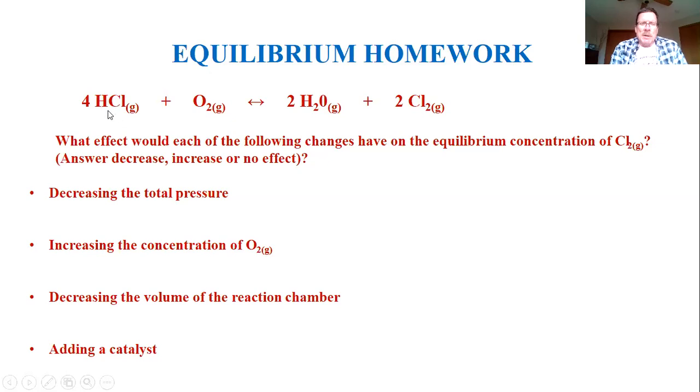For example, here we have 4 moles of hydrochloric acid gas, plus a mole of oxygen, also a gas, and that will go into an equilibrium where you make water vapor and gas again, and some chlorine, diatomic chlorine, 2 moles that is also in gaseous form. You really don't want to be around this because that's poisonous, but it's okay. We're only on paper.